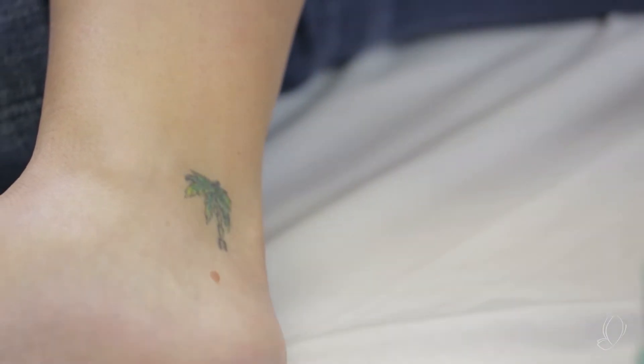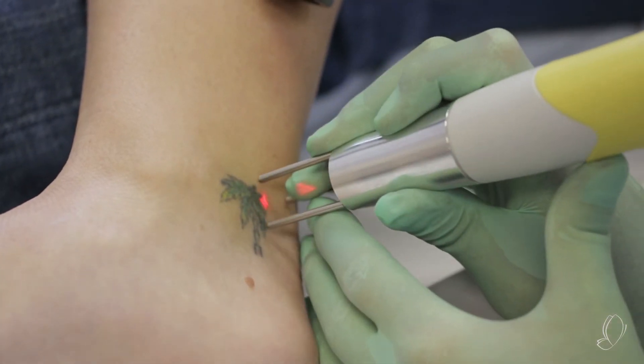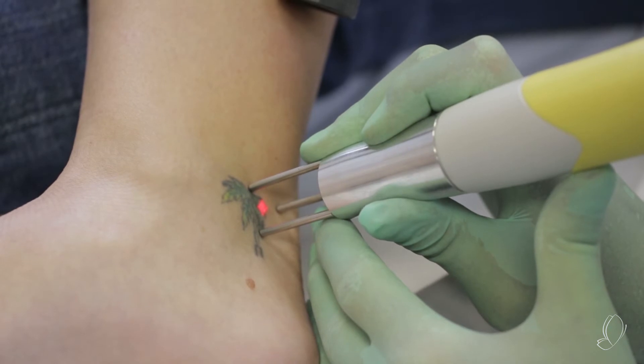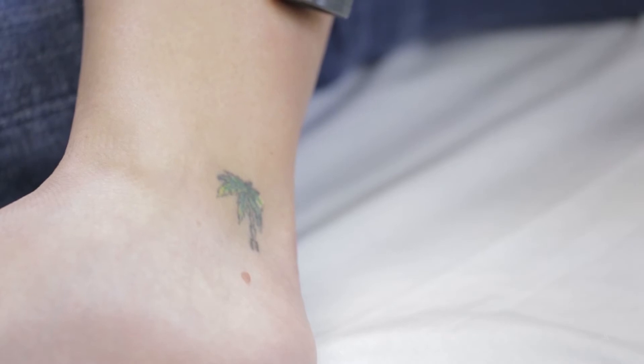All right, so we have this set up. We're using the 1064. We're going to do a test spot. We're going to try right here, perpendicular to skin, three, two, one. How is that? I can handle that. Okay.